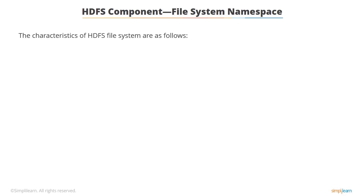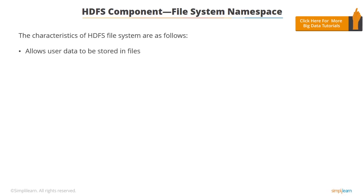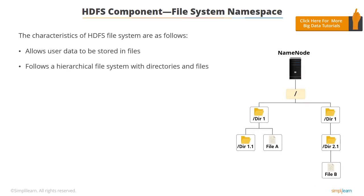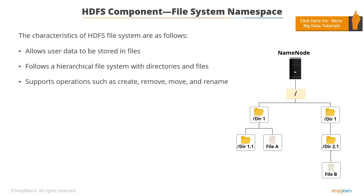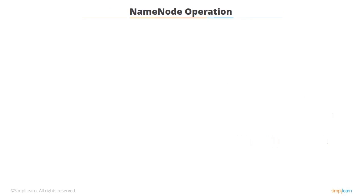HDFS exposes a file system namespace and allows user data to be stored in files. HDFS has a hierarchical file system with directories and files. The name node manages the file system namespace, allowing clients to work with files and directories. A file system supports operations like create, remove, move, and rename. The name node, apart from maintaining the file system namespace, records any change to metadata information.